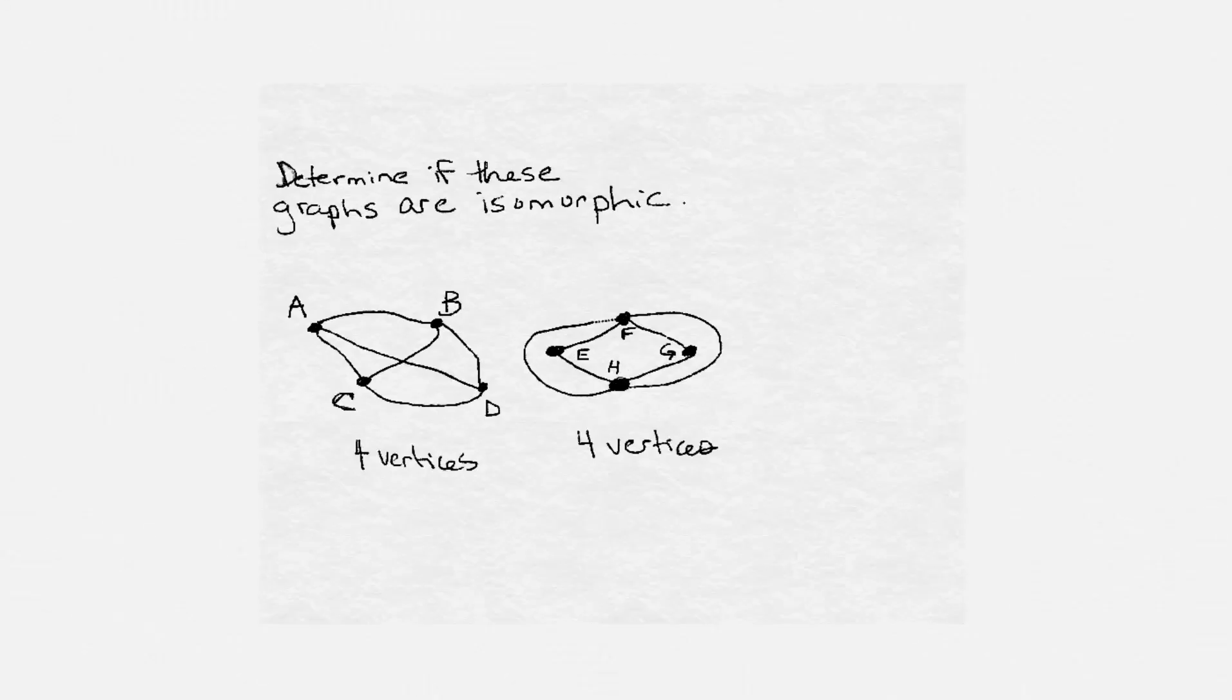The next thing you want to do is analyze the degree of each vertex. The graph on the left has four vertices of degree three. All of the vertices have degree three. And the graph on the right has vertices that aren't degree three, either degree four or degree two. So we can say right there that these two graphs are not isomorphic.